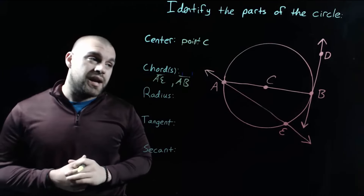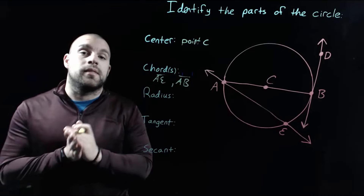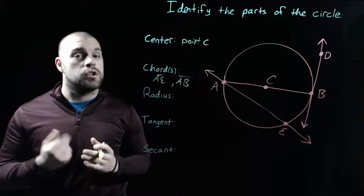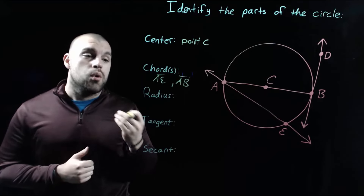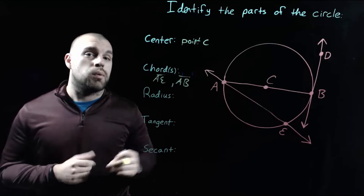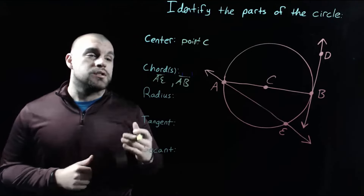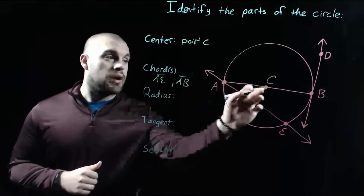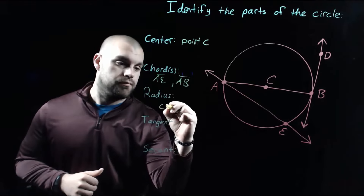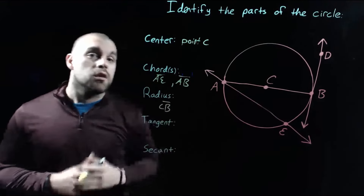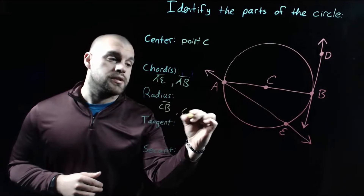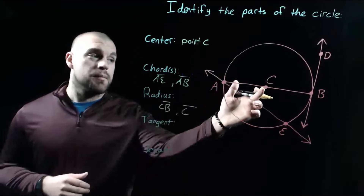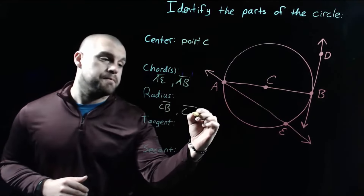If we're looking at a radius, remember a radius goes from the center out to the edge of the circle, so there are going to be two radii that we can look at. When writing a radius, we want to start with the center point, so one radius would be running from C to B. Our other radius, again, starts at point C since that's in the middle, but it goes out to point A.